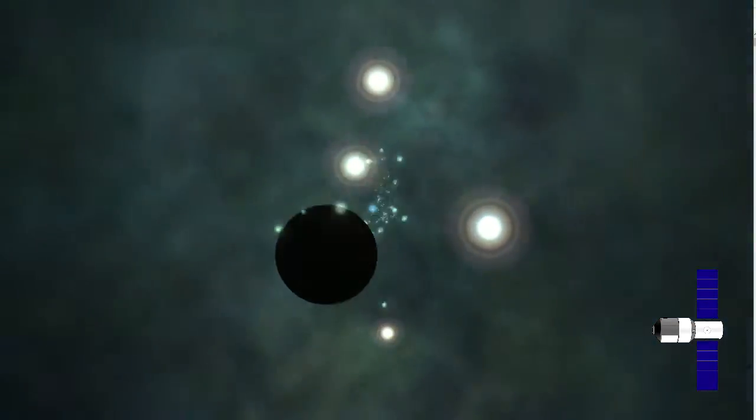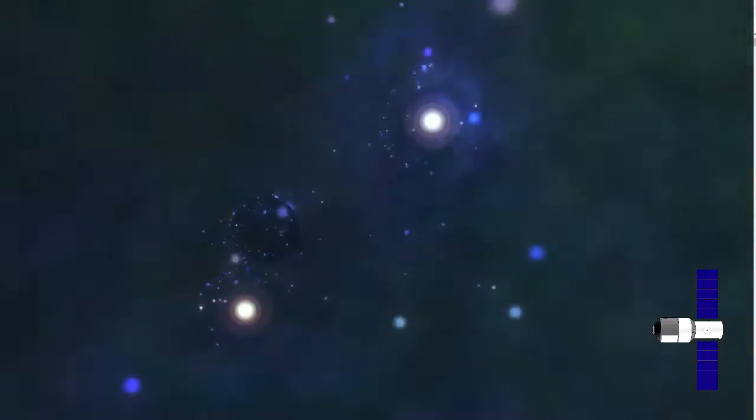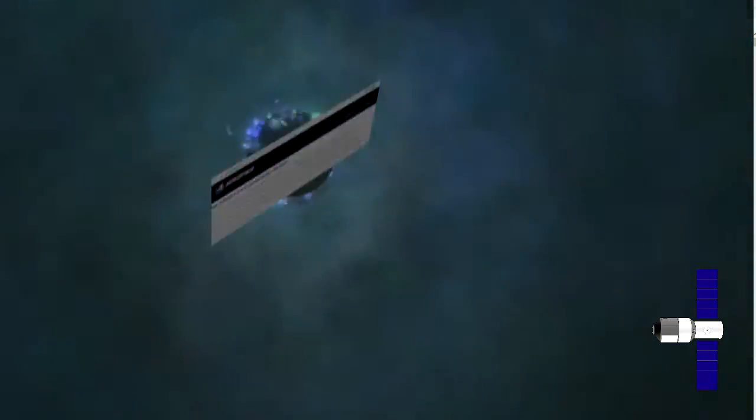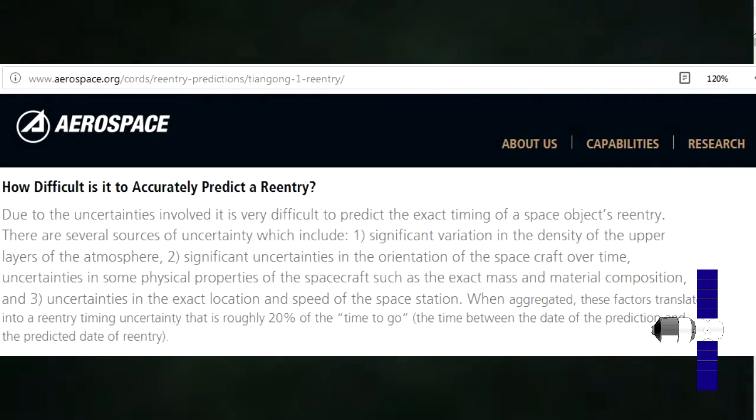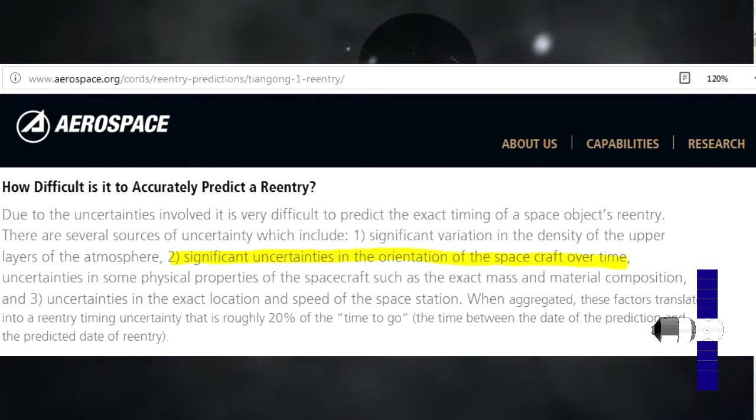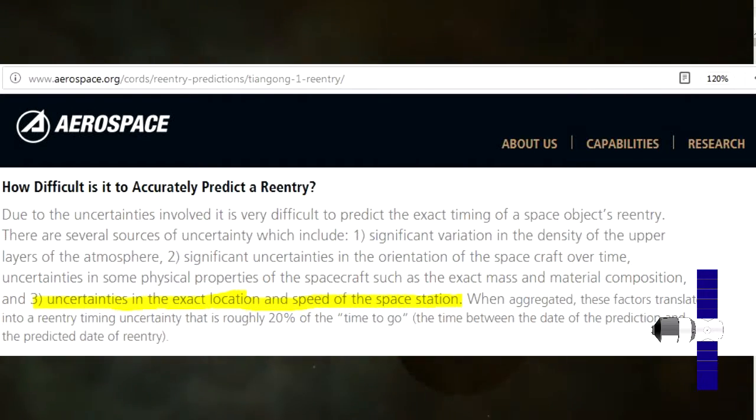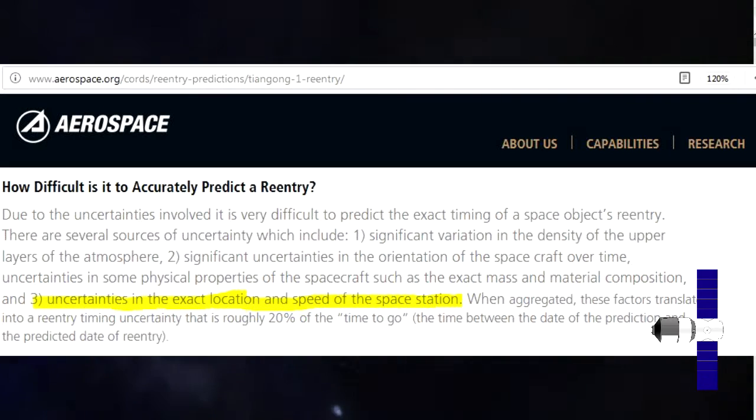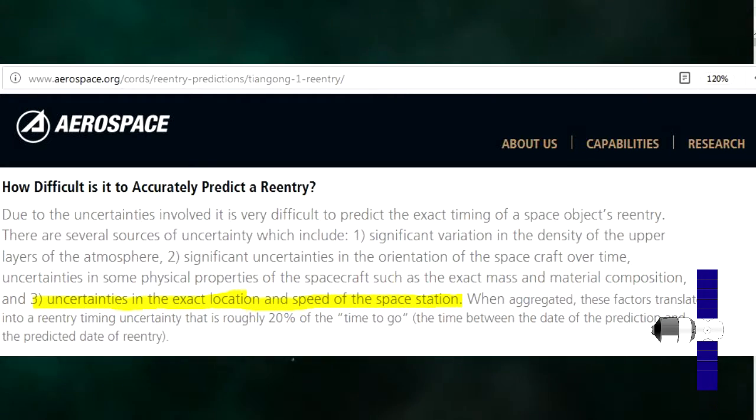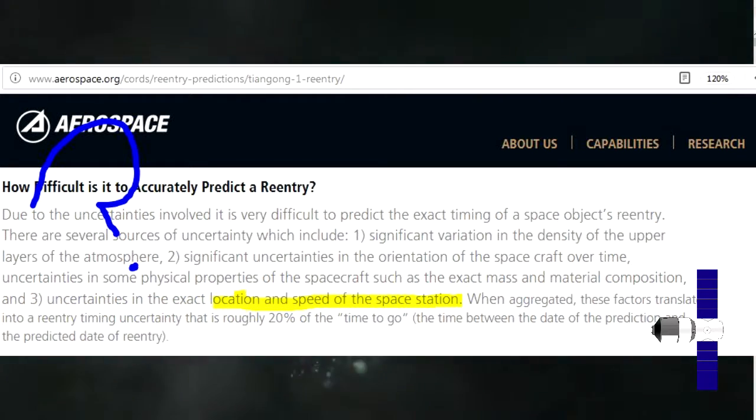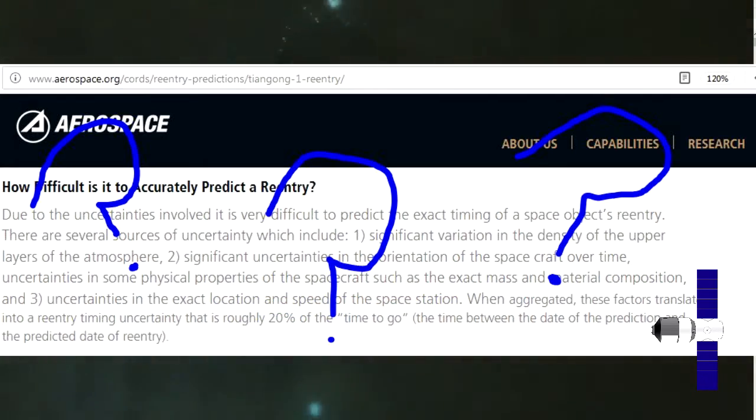Now, the business of predicting exactly where this thing is going to wind up is mostly a crapshoot. There are just too many factors at play to accurately predict where it might go. For example, there's factors like significant variation in the density of the atmosphere, significant uncertainties with the orientation of the spacecraft, uncertainties in the exact location and speed of the space station. And for those of you who can't speak engineer-ese, what they're saying is it's basically equivalent to rolling dice or throwing darts.